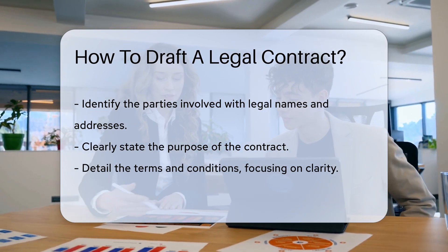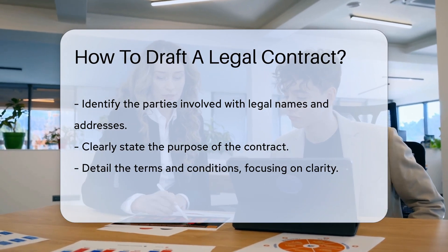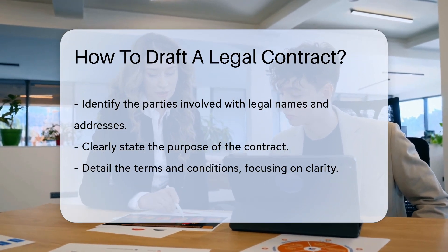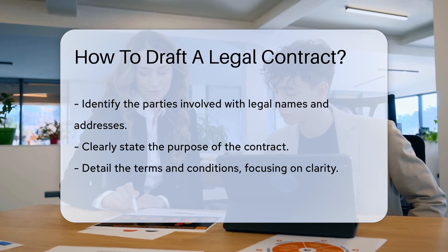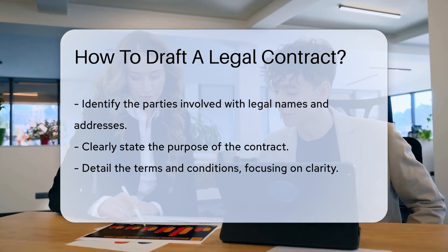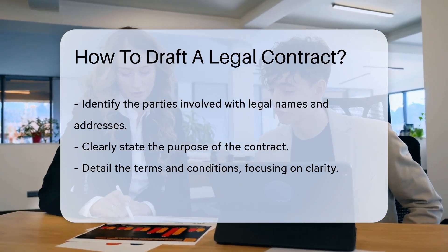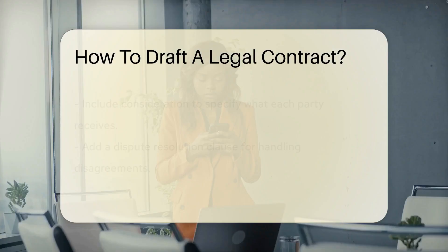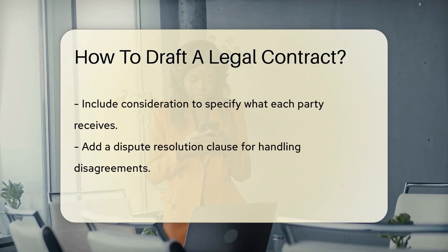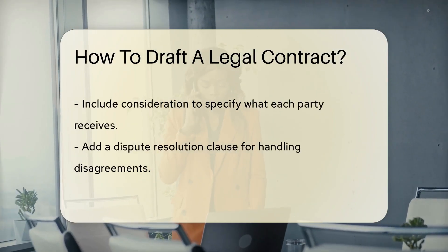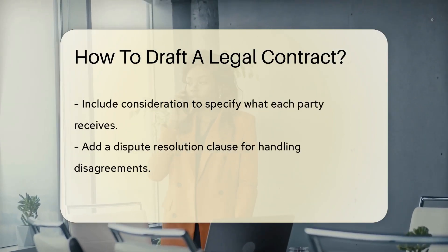The first step in drafting a contract is identifying the parties involved. This includes their legal names and addresses, establishing the entities entering into the agreement. It is crucial for the contract to specify who the parties are to avoid any ambiguity.